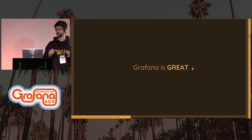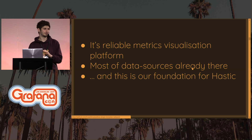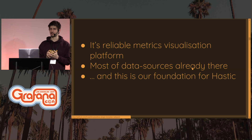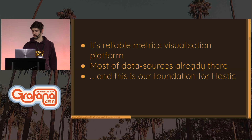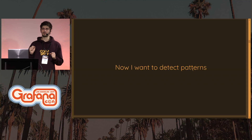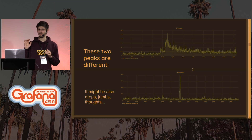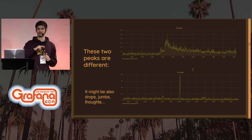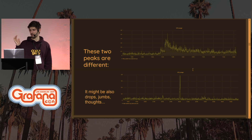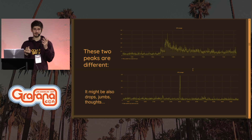I took Grafana as the basis. Grafana has two nice things: you can visualize pretty much everything, and you have data sources which you can query. Now we want to detect patterns — a simple task where you have one pattern that looks like a spike. One is an Instagram post and another is a backup, and you want to distinguish them.